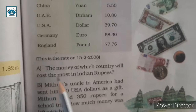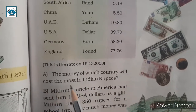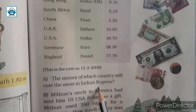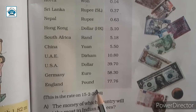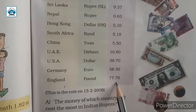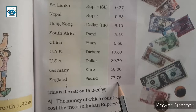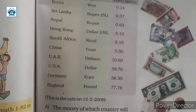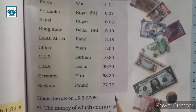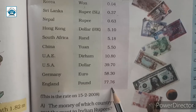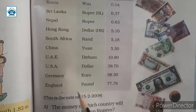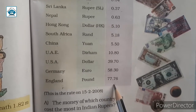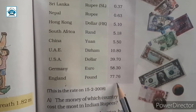Question A: The money of which country will cost the most in Indian rupees? According to this table, we look at the last column of Indian rupees. We can see 77.76 rupees — that is what we get in exchange, and it is from England. Means one pound makes 77.76 rupees, so this is the highest.